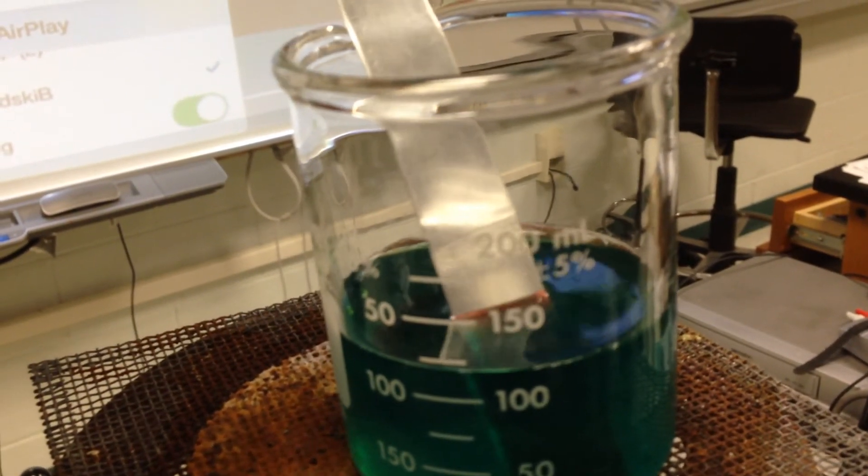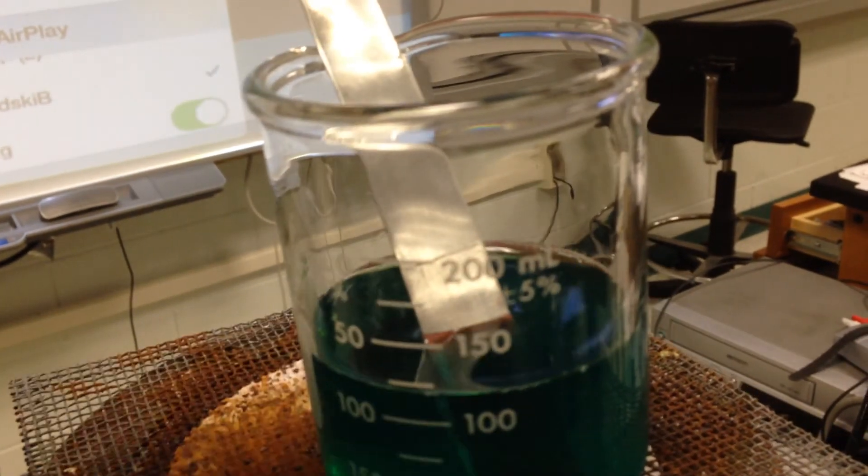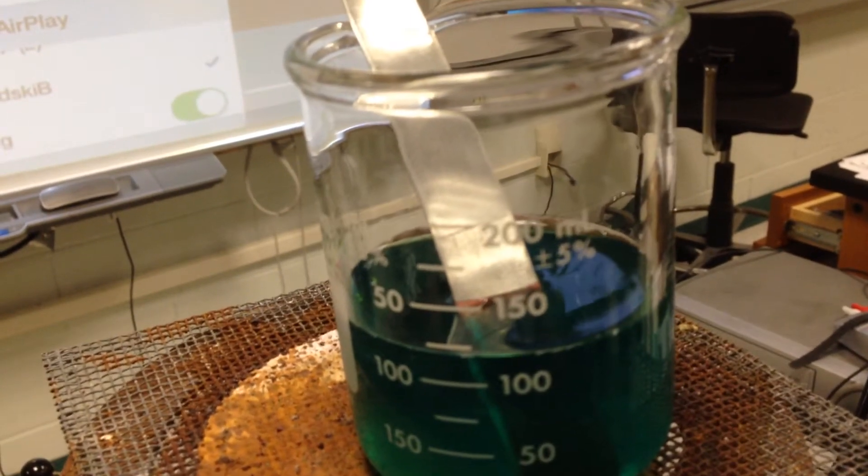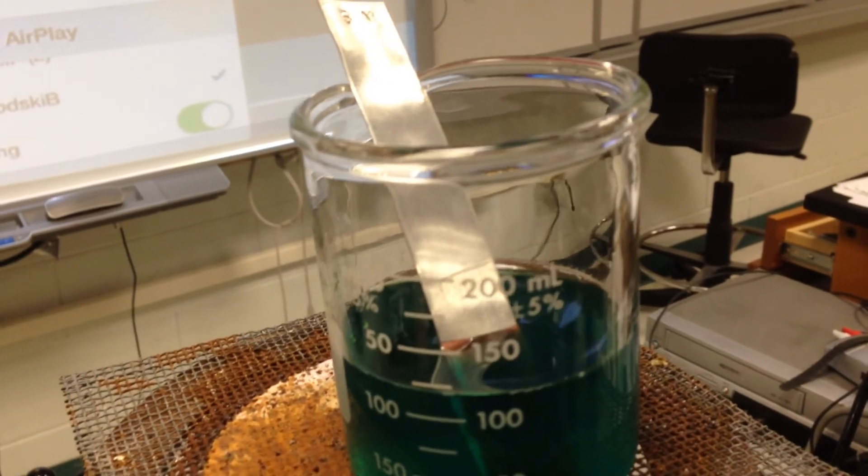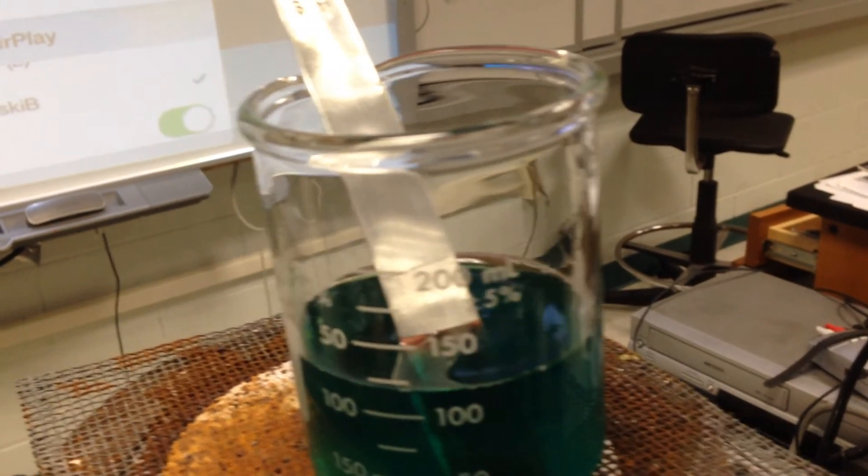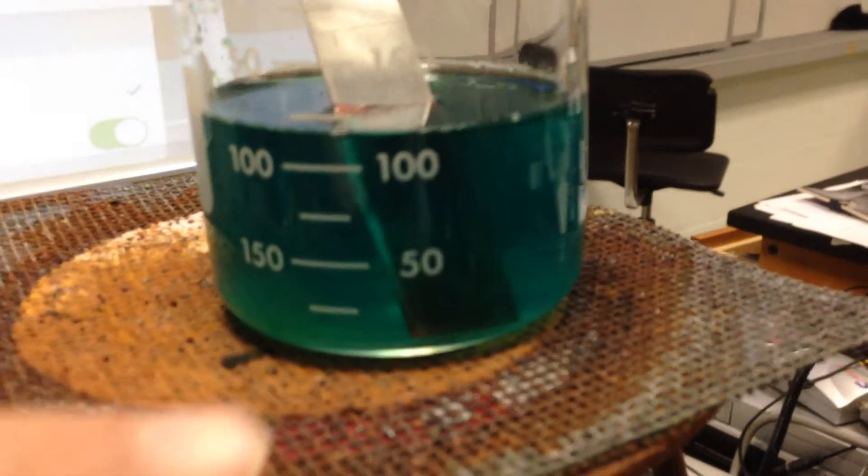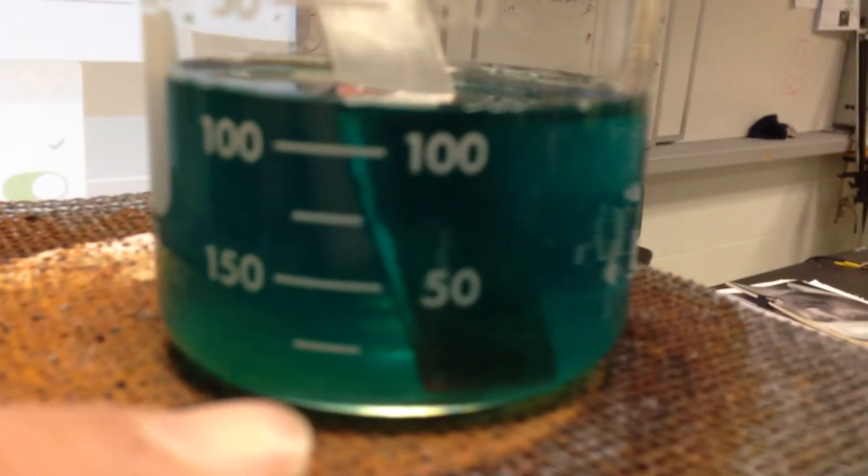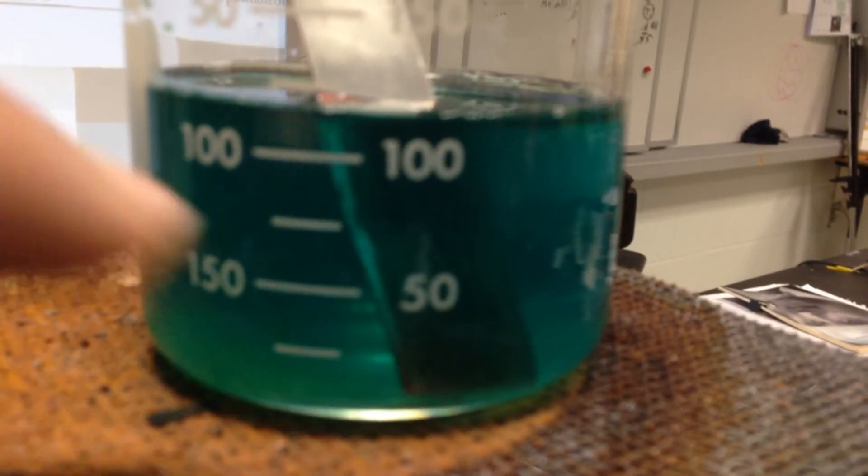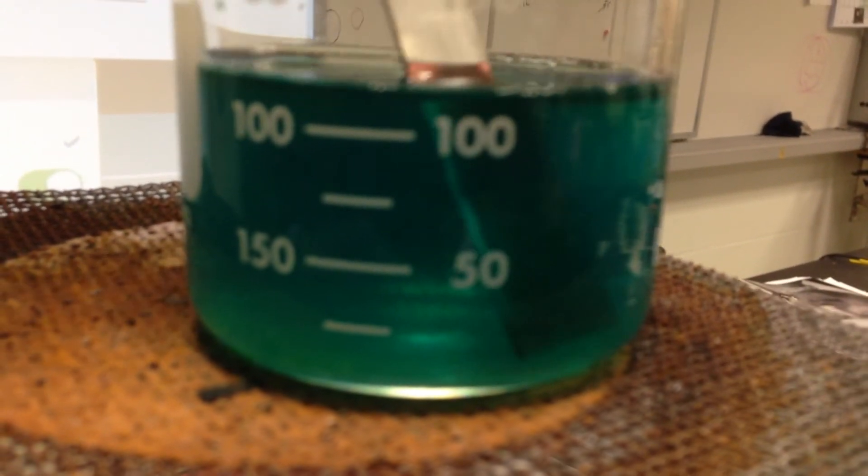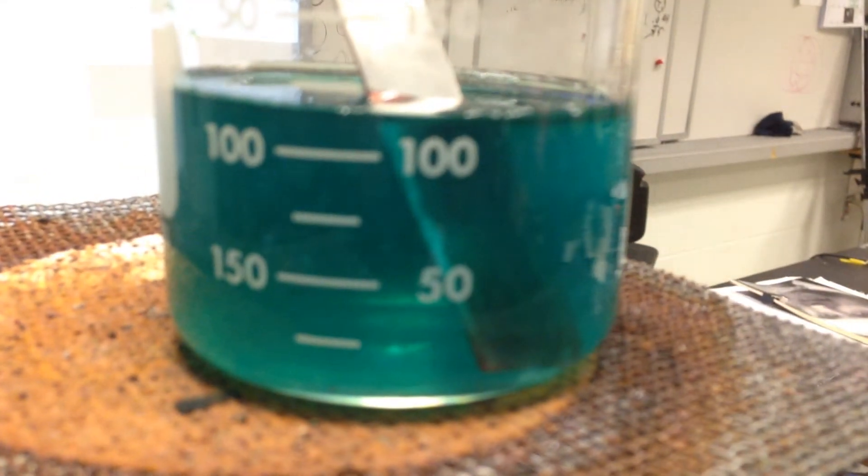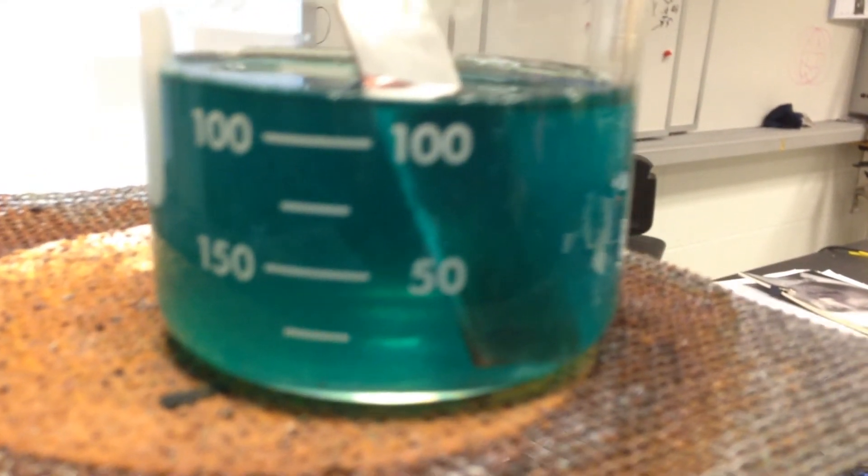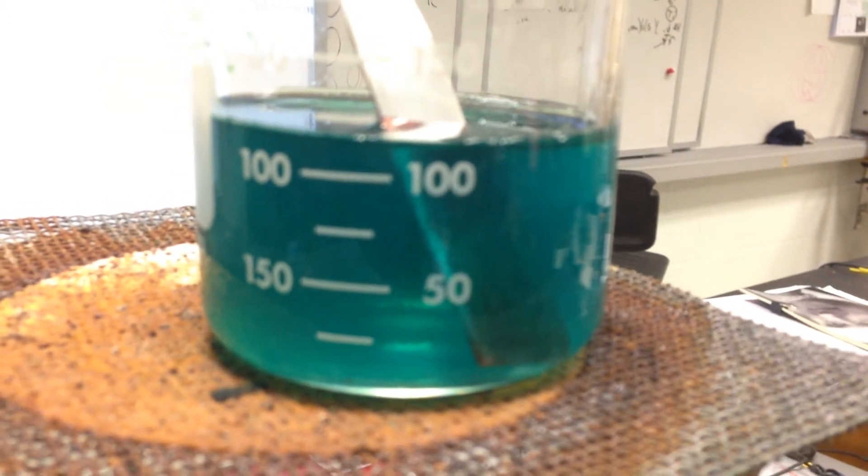The tin is forcing its electrons on the copper plus two, acting as a reducing agent. The copper plus two is acting as an oxidizing agent. You can see from this angle where that white substance is starting to appear, and that is just the tin plus two being developed there.